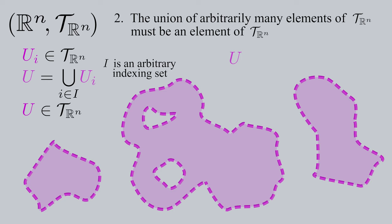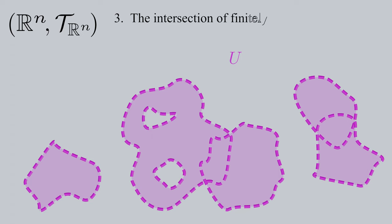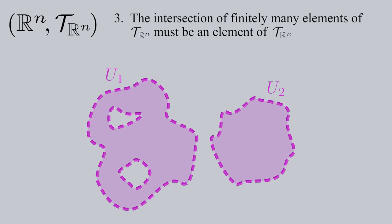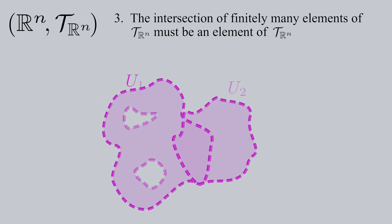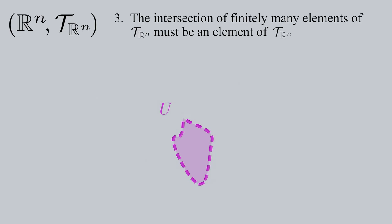Likewise for the third axiom, which requires closure under finite intersections, if you take a finite number of open subsets and then intersect them, you'll end up with another open subset big U. We say that some big U is equal to an intersection of open subsets u sub little j across some finite indexing set big J. You might be wondering why there's no closure under infinite intersections. Here's a good reason why.